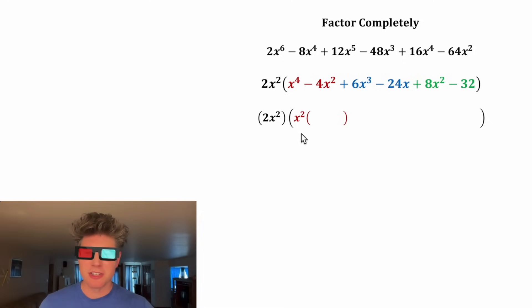For the first two, the greatest common factor is x squared, and on the inside we're left with x squared minus four. And then for the next two, we can factor out a 6x, and we'll still have x squared minus four. And then for these two, we can factor out an eight, and that'll also leave us with x squared minus four. So this method definitely worked.